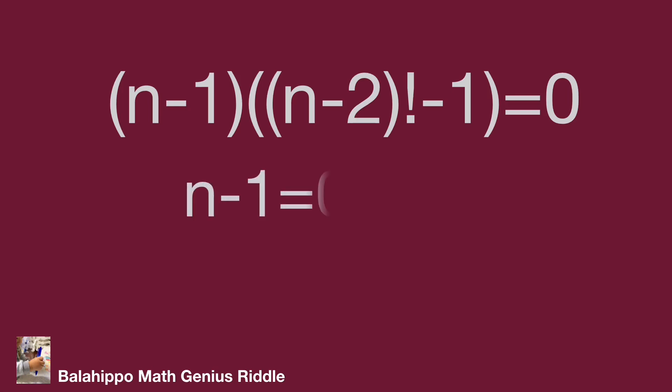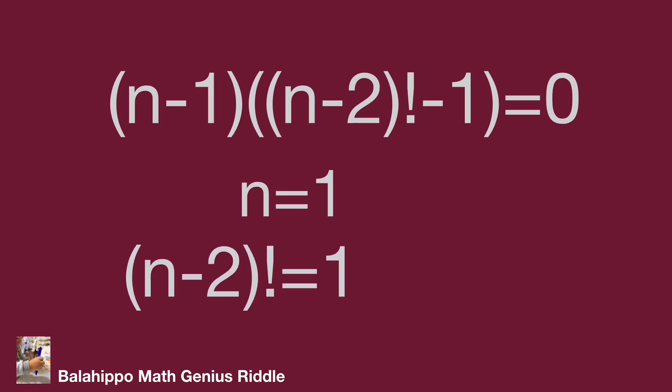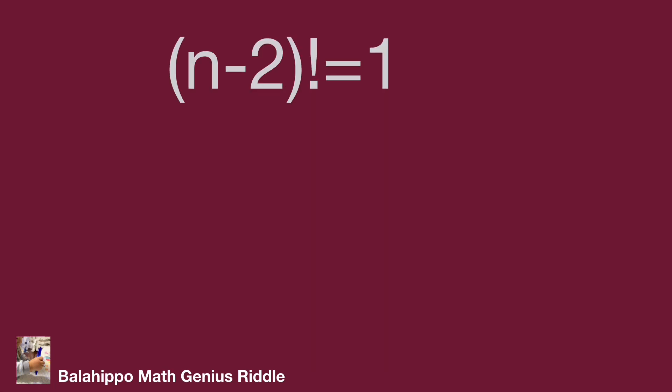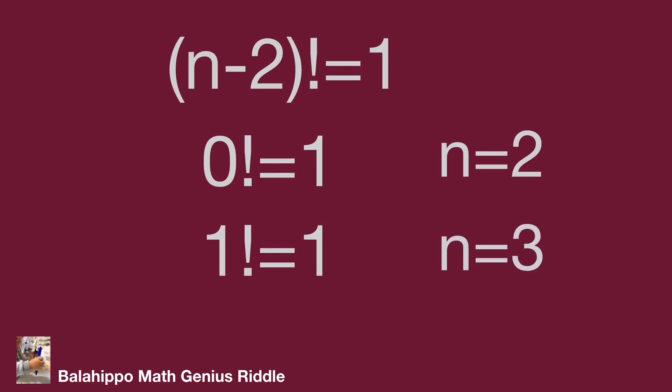So either n minus 1 equals 0, giving n equals 1, or (n minus 2) factorial minus 1 equals 0, meaning (n minus 2) factorial equals 1. Since both 0 factorial and 1 factorial equal 1, this gives n equals 2 or n equals 3. We now have three possible results: n equals 1, 2, or 3.